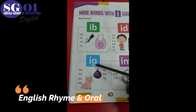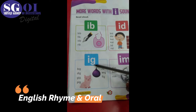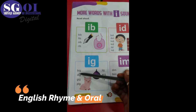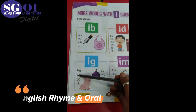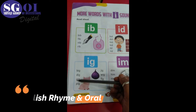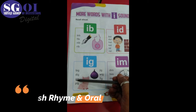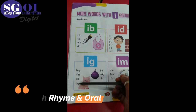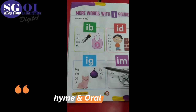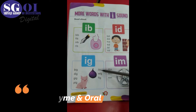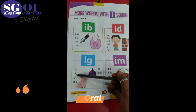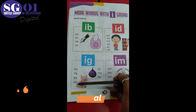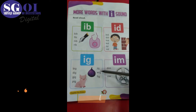Next is I-G, -ig sound words. B-I-G, Big. D-I-G, Dig. G-I-G, Gig. P-I-G, Pig. J-I-G, Jig. W-I-G, Wig. F-I-G, Fig. Review: Big, Dig, Gig, Pig, Jig, Wig, Fig.